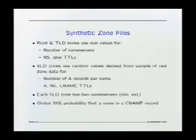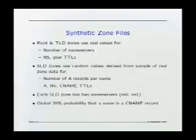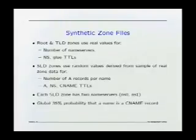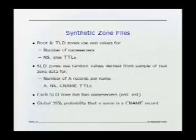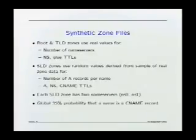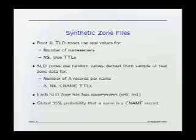I made up a bunch of zone files, and the contents of those zone files are sort of based on reality. For the root and top-level domains, it uses the actual zone data for the number of name servers and the TTLs on the name server and glue records. For the second-level domains, since there were so many of them, I took a sample of real data and used that sample to generate random values, trying to mimic the number of address records per name and the TTLs on address, name server, and CNAME records. Also, this 35% probability that any name is a CNAME record was based on actual measurements.